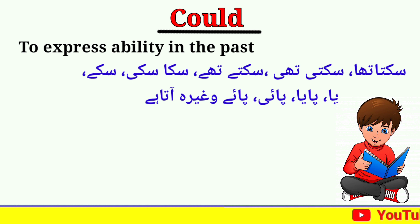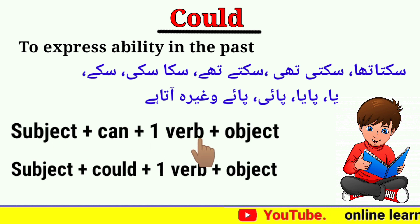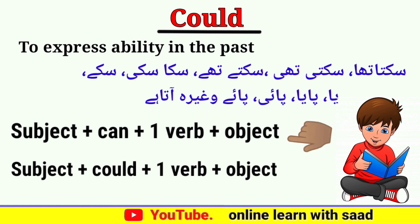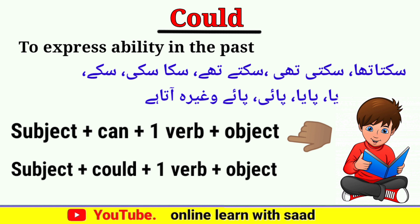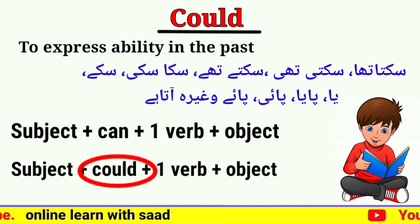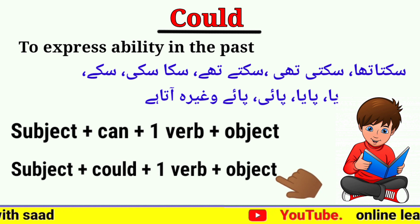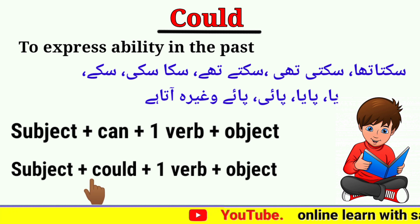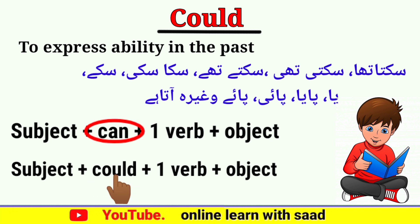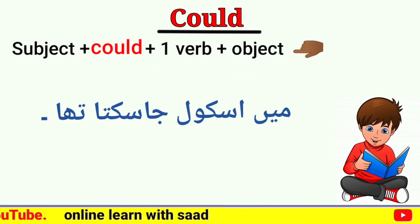Can modal کی structure تھی: Subject + can + first form of verb + object۔ اب ہم can کو اٹھا کر اس کی جگہ could لکھیں گے۔ Could modal کی structure same وہی ہے — ہم نے صرف can کو ہٹا کر could لگایا ہے: Subject + could + first form of verb + object۔